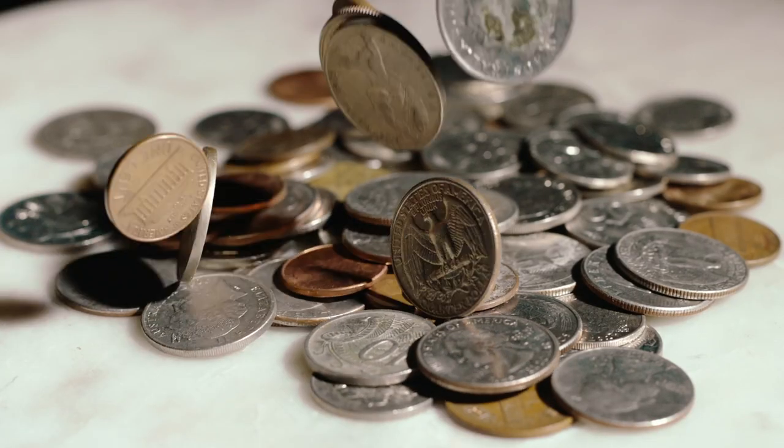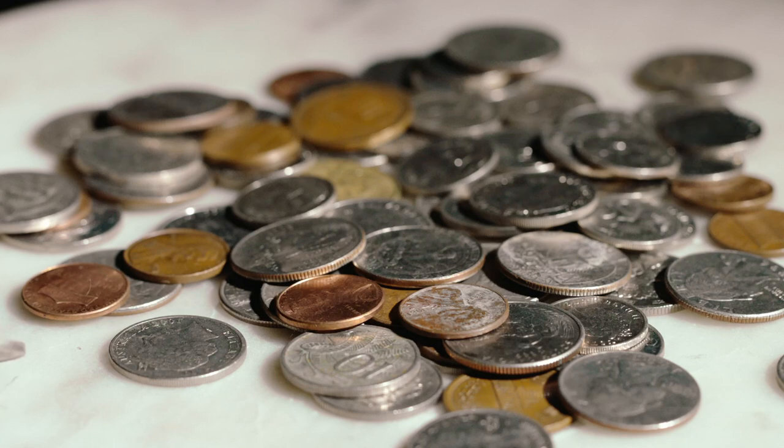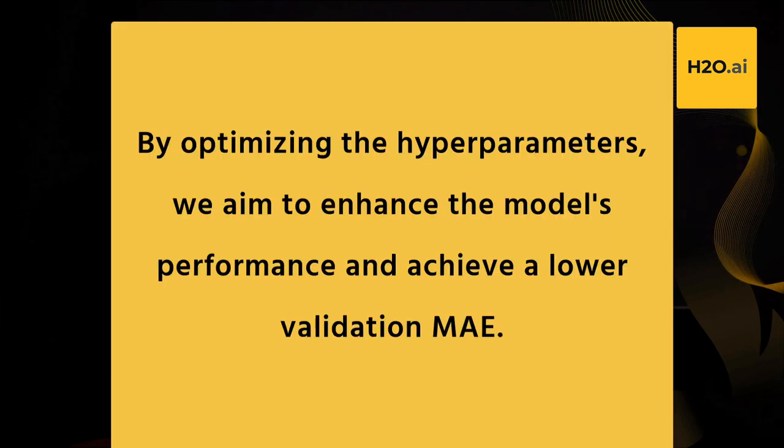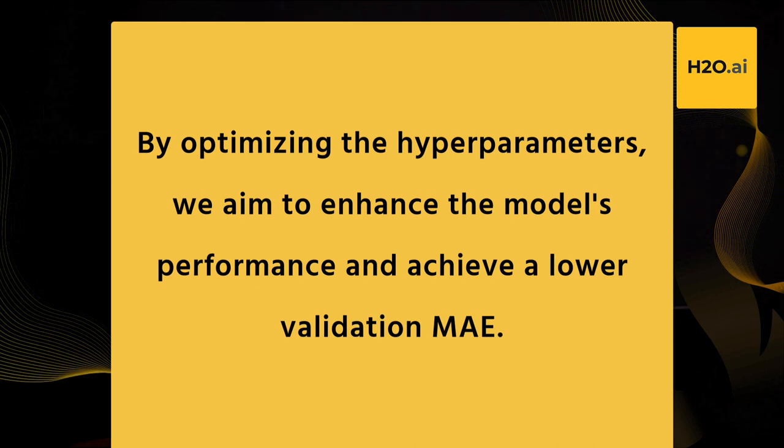A low-performing model could result in inaccurate counting, potentially leading to over-counting or under-counting of deposited coins. In the context of an ATM, accuracy is crucial, making the current model unsuitable for this specific use case. It becomes necessary to tune the hyperparameters of the model to improve the validation MAE. By optimizing the hyperparameters, we aim to achieve a lower validation MAE, experimenting with different settings and techniques such as grid search to identify the optimal configuration for accurate coin counting.